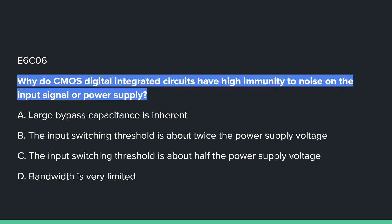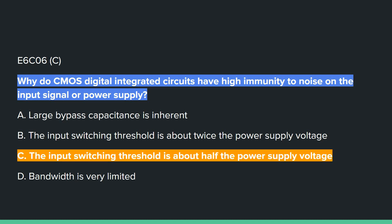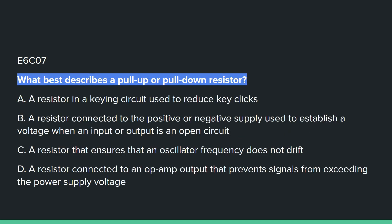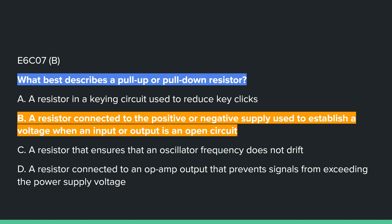E6C06: Why do CMOS digital integrated circuits have high immunity to noise on the input signal or power supply? C, the input switching threshold is about half the power supply voltage. E6C07: Which best describes a pull-up or pull-down transistor? B, a resistor connected to the positive or negative supply used to establish a voltage when an input or output is an open circuit.